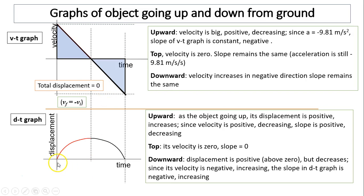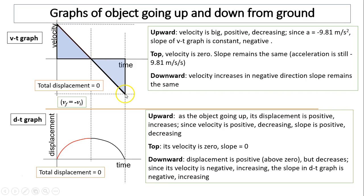Total displacement is zero — you start with zero and you end with zero. Your velocity: if you start with say 30 meters per second, your end should be negative 30 meters per second — kind of symmetrical. Your final and initial speed should be the same, but in the opposite direction.